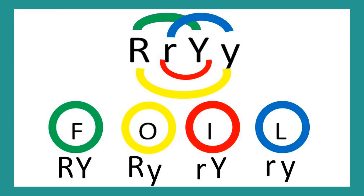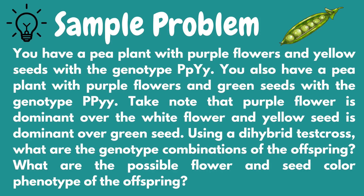Let's proceed with another sample problem. You have a pea plant with purple flowers and yellow seeds, with genotype heterozygous purple flower and heterozygous yellow seed. You also have a pea plant with purple flowers and green seeds, with genotype homozygous dominant purple flower and homozygous recessive green seed. Take note that purple flower is dominant over white flower, and yellow seed is dominant over green seed. Using a dihybrid cross, what are the genotype combinations of the offspring, and what are the possible flower and seed color phenotypes?